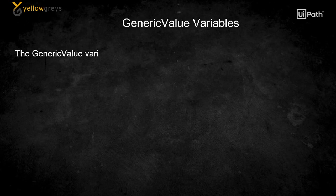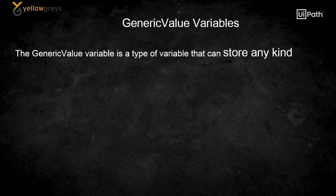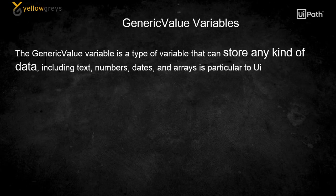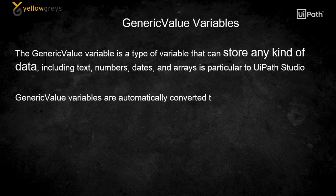Generic variables. The generic variable is a type of variable that can store any kind of data including text, numbers, dates, and arrays, and is particular to UiPath Studio. Generic value variables are automatically converted to other types in order to perform certain actions.